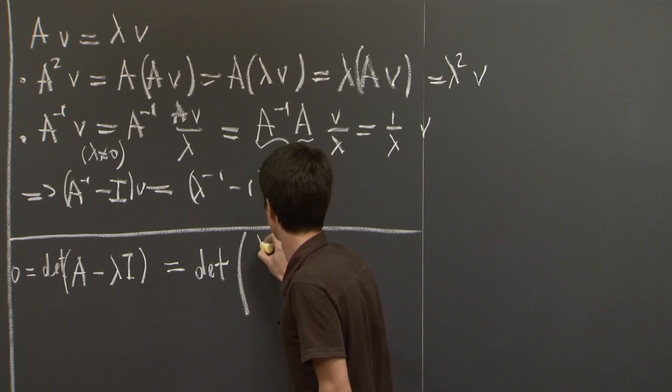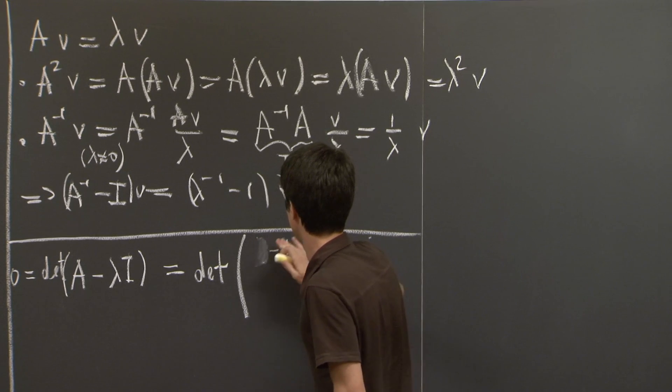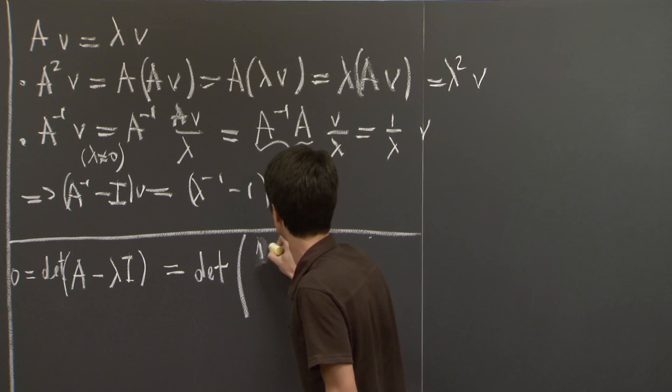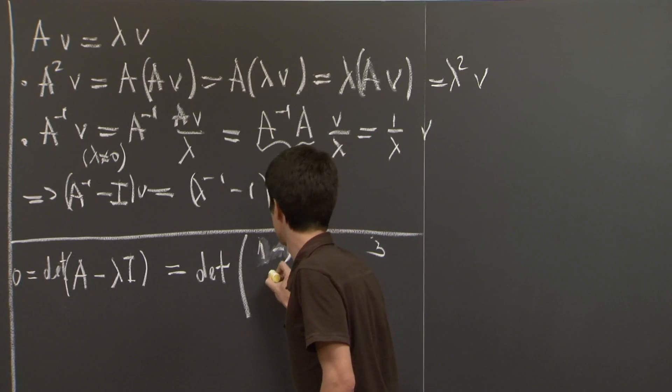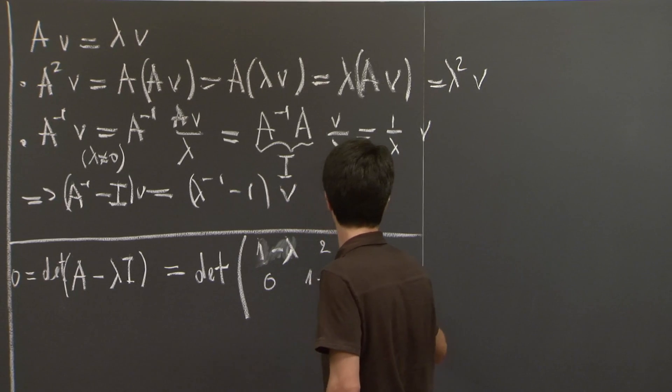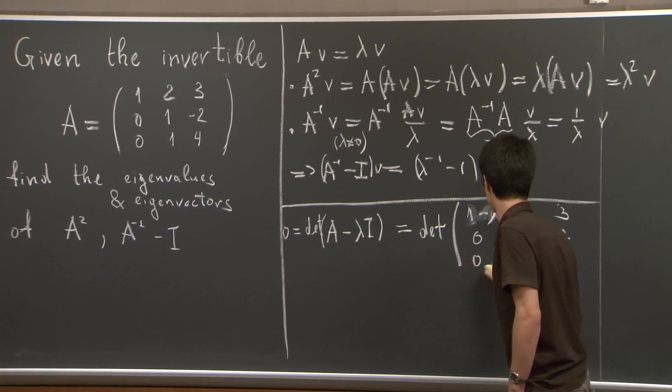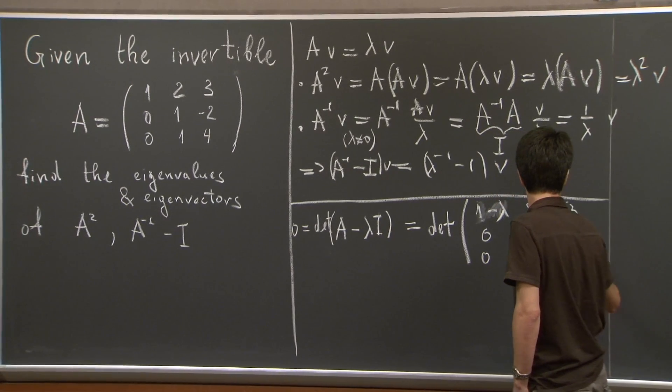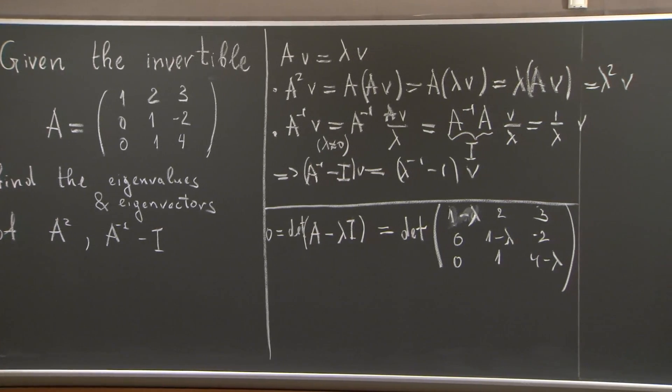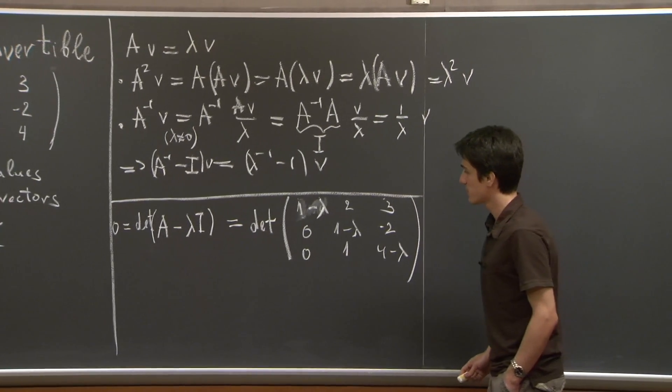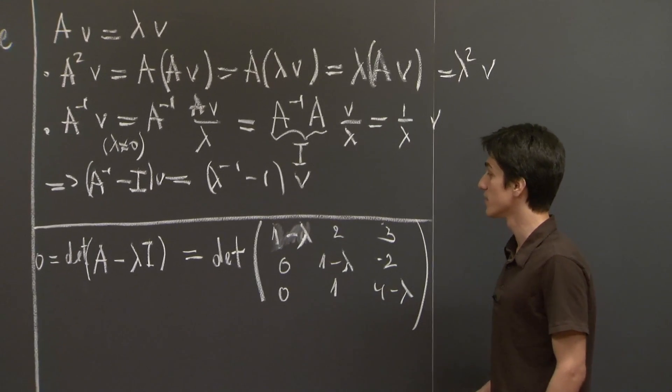lambda minus 1, 2, 3, 0, 1 minus lambda, 2, negative 2, and 0, 1, 4 minus lambda.